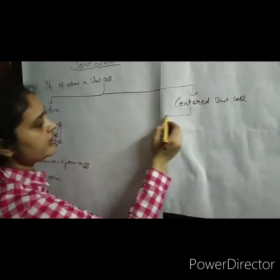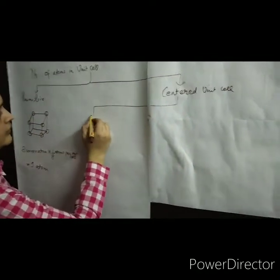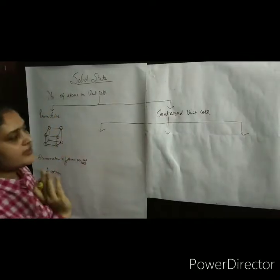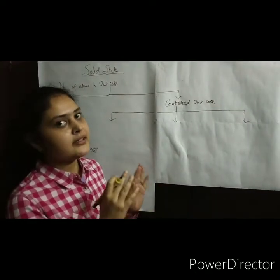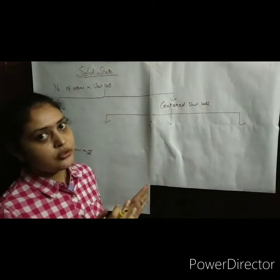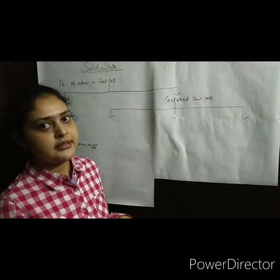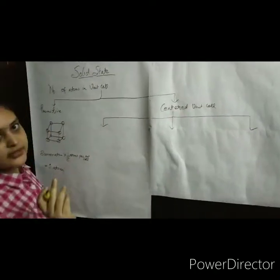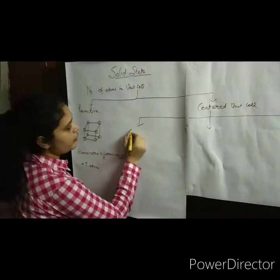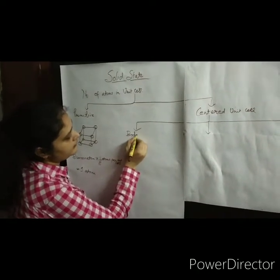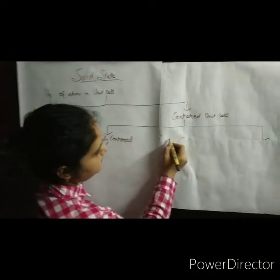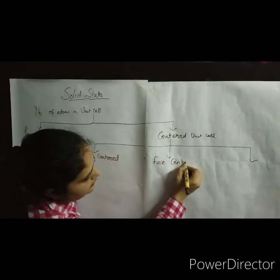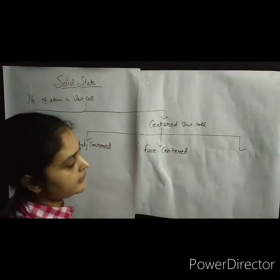Centered unit cells are of three types. Centered unit cells are cells in which atoms are present at the eight corners and also at positions other than the corners. These are classified into three types: first is body centered, second is face centered, and third is end centered.